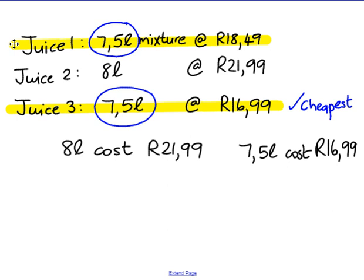The easiest way to see what happens is we can work out the cost per liter — that means the cost for one liter. How do we get from eight liters to one liter? We have to divide by eight, so eight cancels and we get one. If we do that, we've got to divide the price by eight as well.